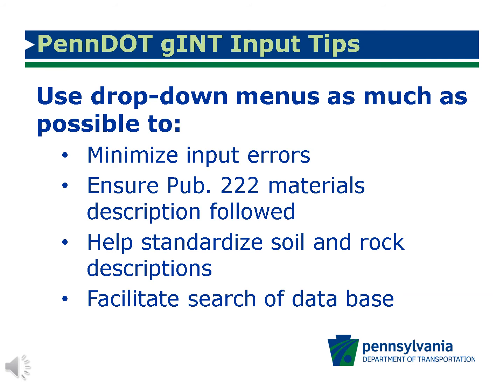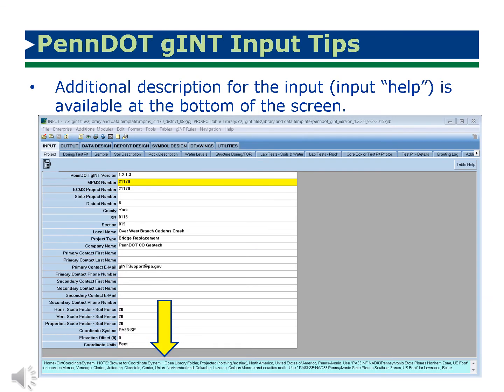Please, as much as is possible, try to use the drop-down menus where they are provided. This helps to minimize input and spelling errors, ensures Publication 222 materials descriptions are followed, standardizes soil and rock descriptions, and facilitates the search capability of the database. For example, if Philadelphia is spelled incorrectly or abbreviated as PHILA or PHILI, a database query will not capture all applicable projects in Philadelphia County. Where appropriate, additional information for each input item has been included at the bottom of the screen; please refer to those directions as you enter data.